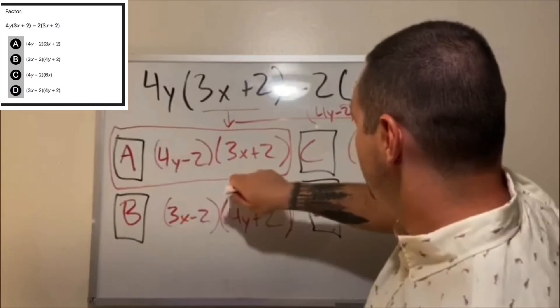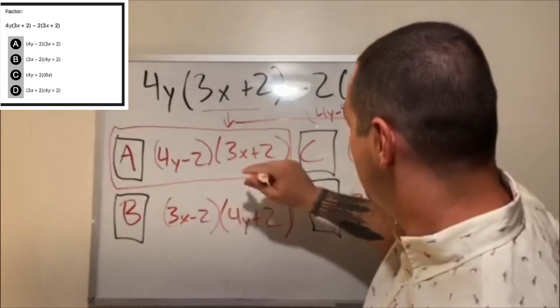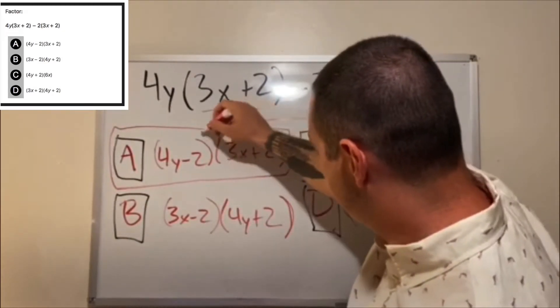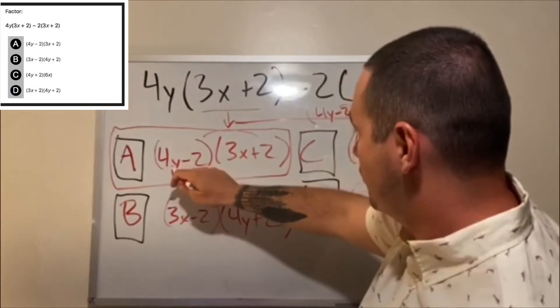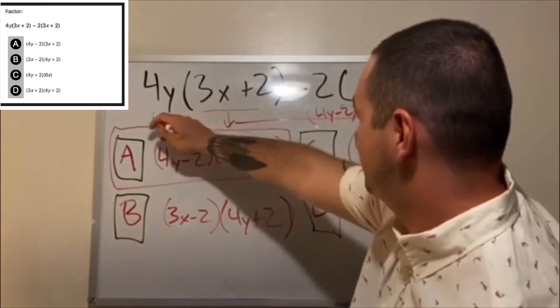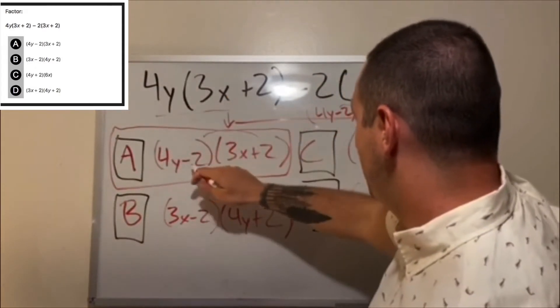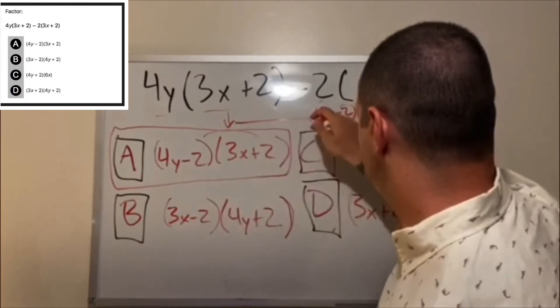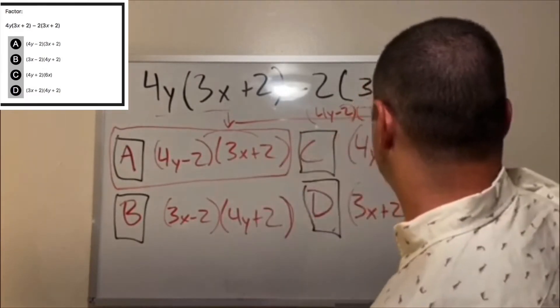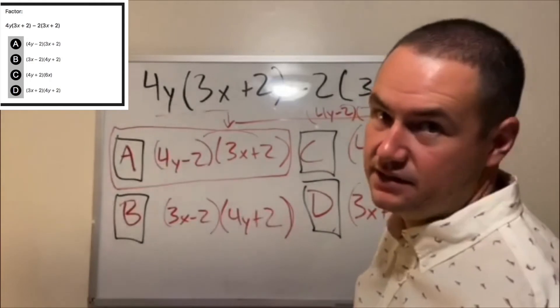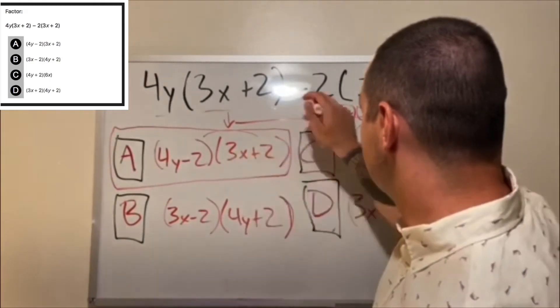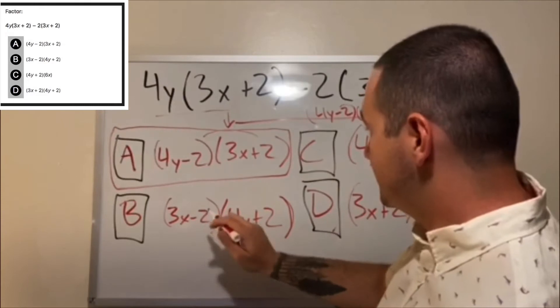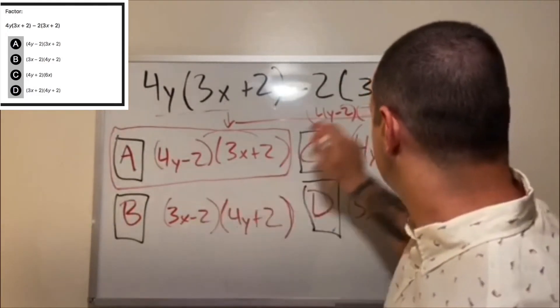So if I wanted to go through and distribute, what I would do is I would plug this back in to here and I would get 4y(3x+2) minus 2(3x+2). That is how clear it is - you can clearly see that this is the same as this down here.